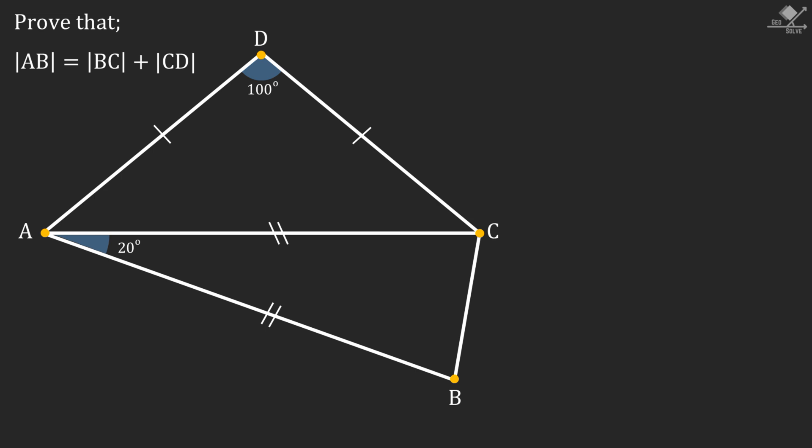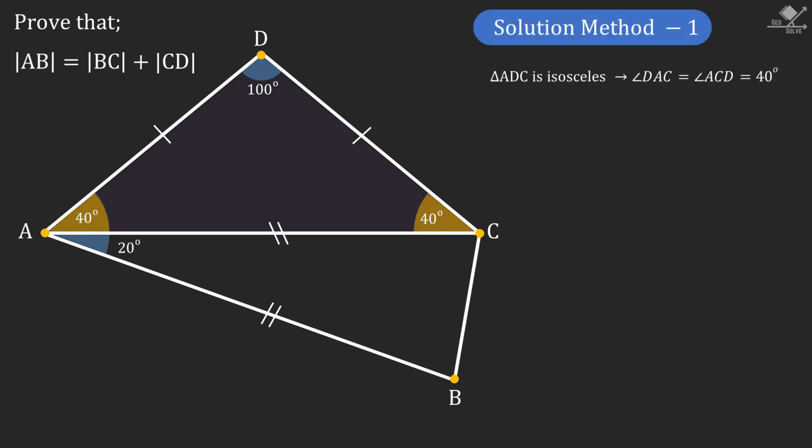First we can see that base angles of the isosceles triangle DAC are 40 degrees. Similarly, base angles of the isosceles triangle ABC can be calculated as 80 degrees.